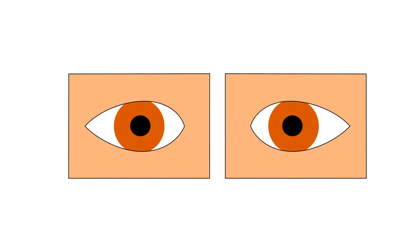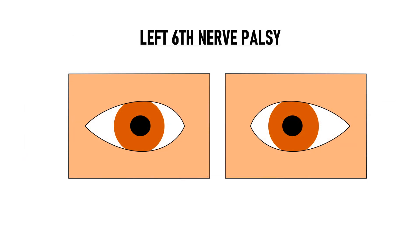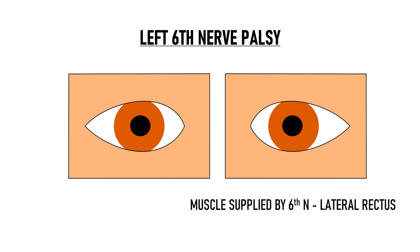Suppose this is our patient and he has left-sided sixth nerve palsy. The extraocular muscle that is supplied by the sixth nerve is the lateral rectus muscle. Therefore, in sixth nerve palsy, the lateral rectus muscle is affected — it is underacting. The function of the lateral rectus muscle is abduction, which means that it pulls the eye temporally. So, if this patient has a left-sided sixth nerve palsy, it means that his left lateral rectus muscle is underacting.